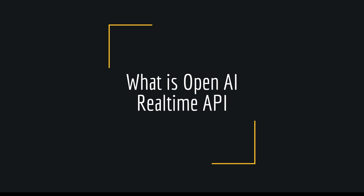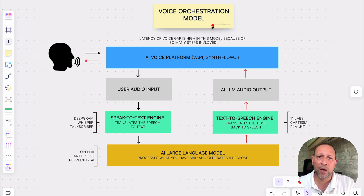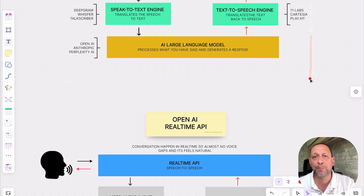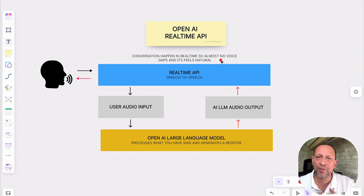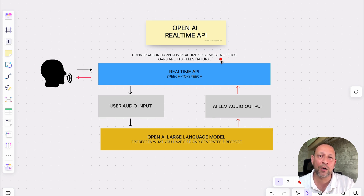What exactly is the real-time API? OpenAI's real-time API is designed to cut down processing time and make voice AI feel more human with near-instantaneous responses. Unlike the voice orchestration model that converts audio to text and then back again, the real-time API uses speech-to-speech to stream audio in and out directly. This means conversations happen in real-time without awkward pauses, allowing for fluid conversation where you can ask questions, interrupt, or switch topics seamlessly, just like a real conversation.